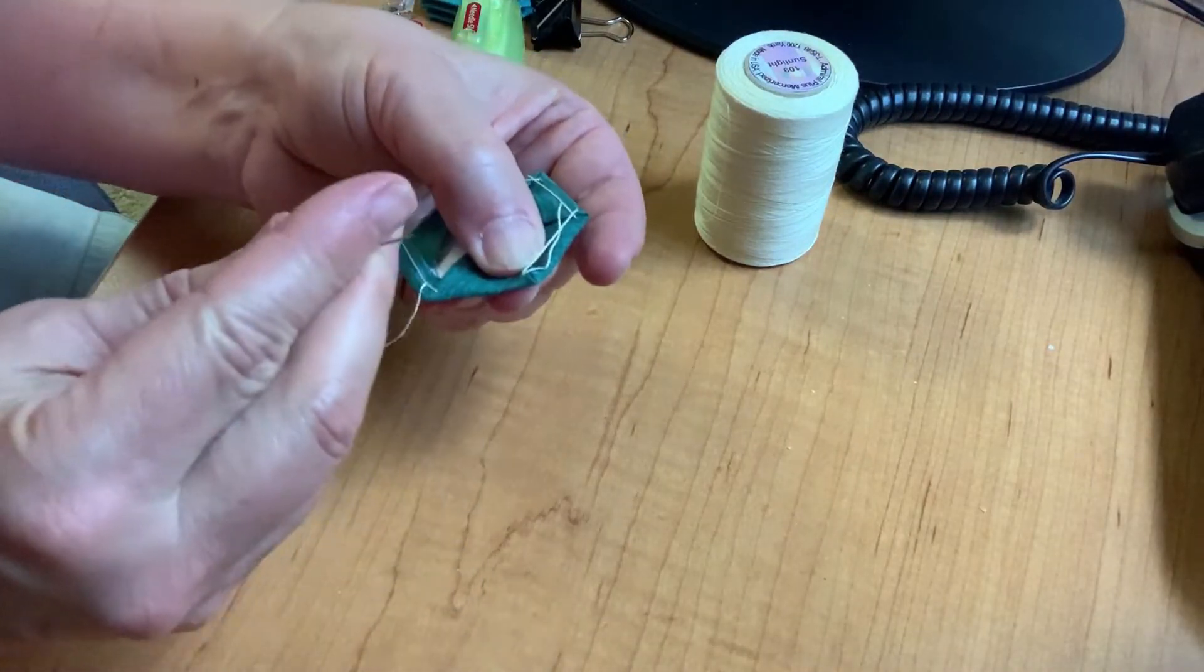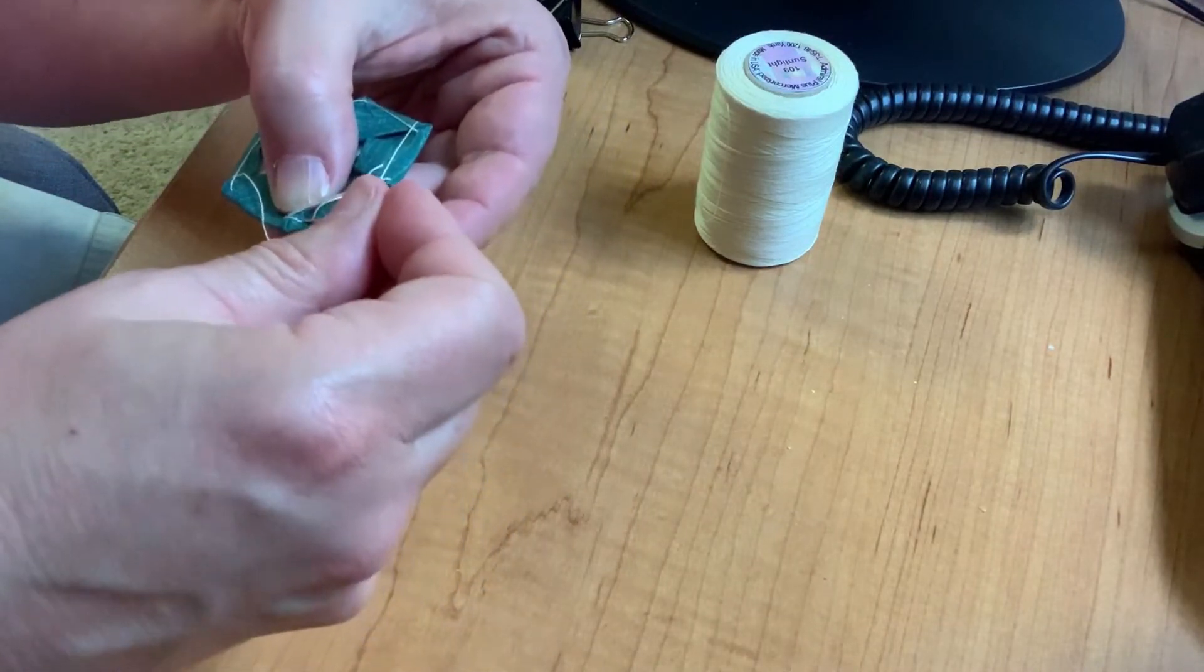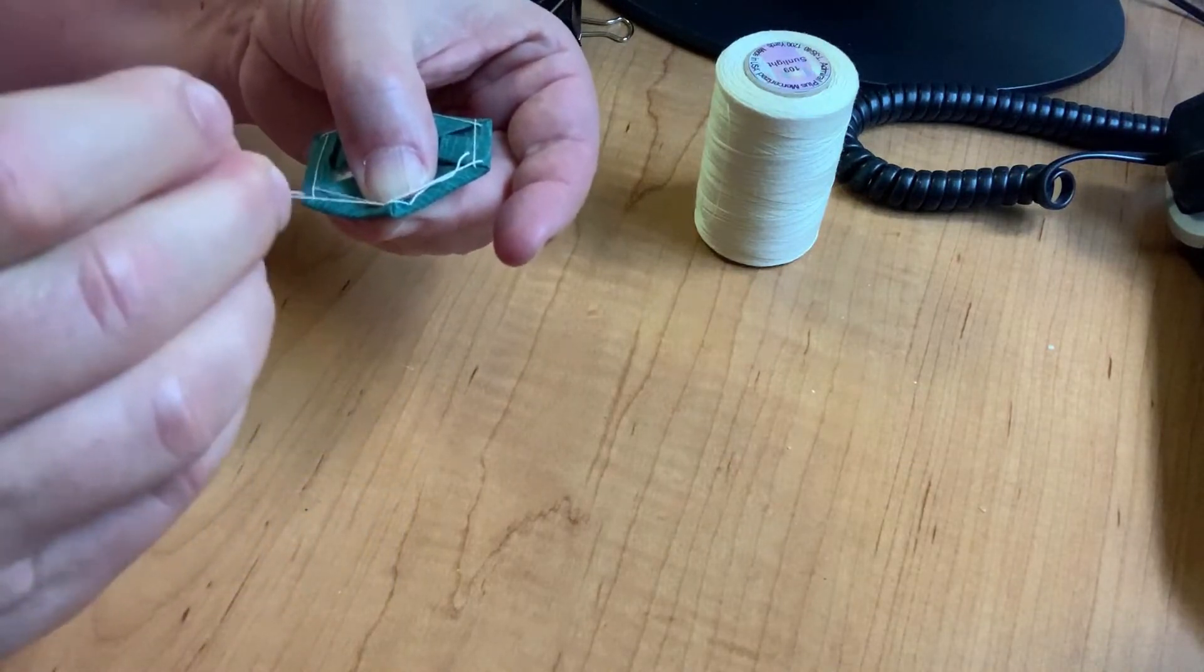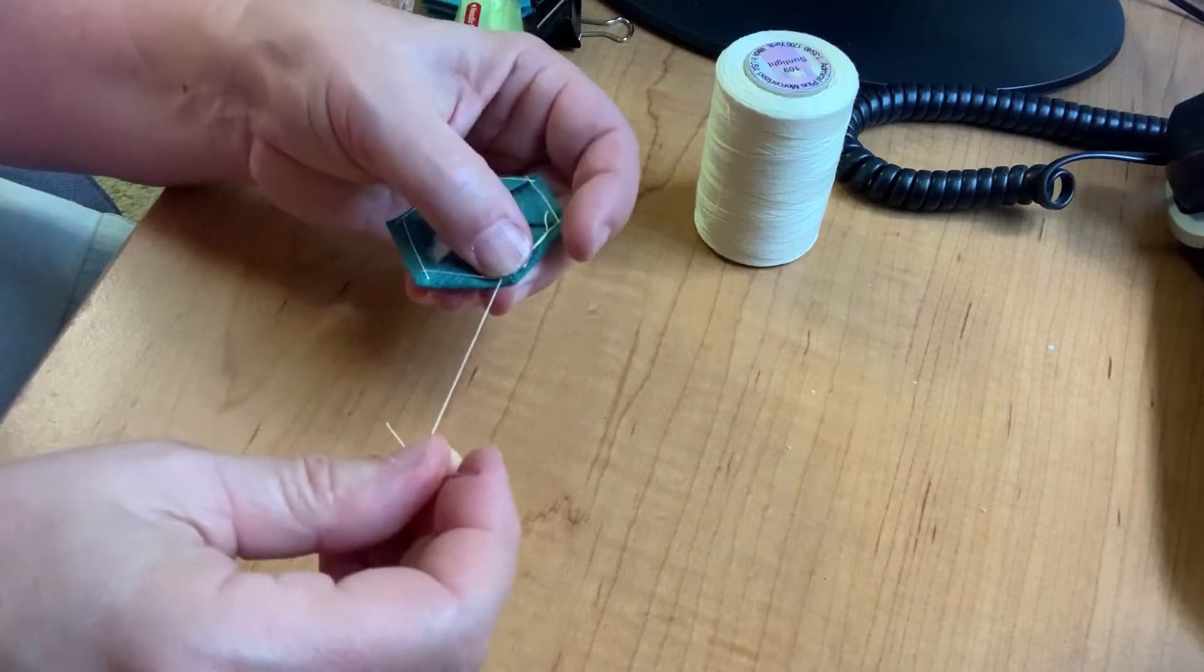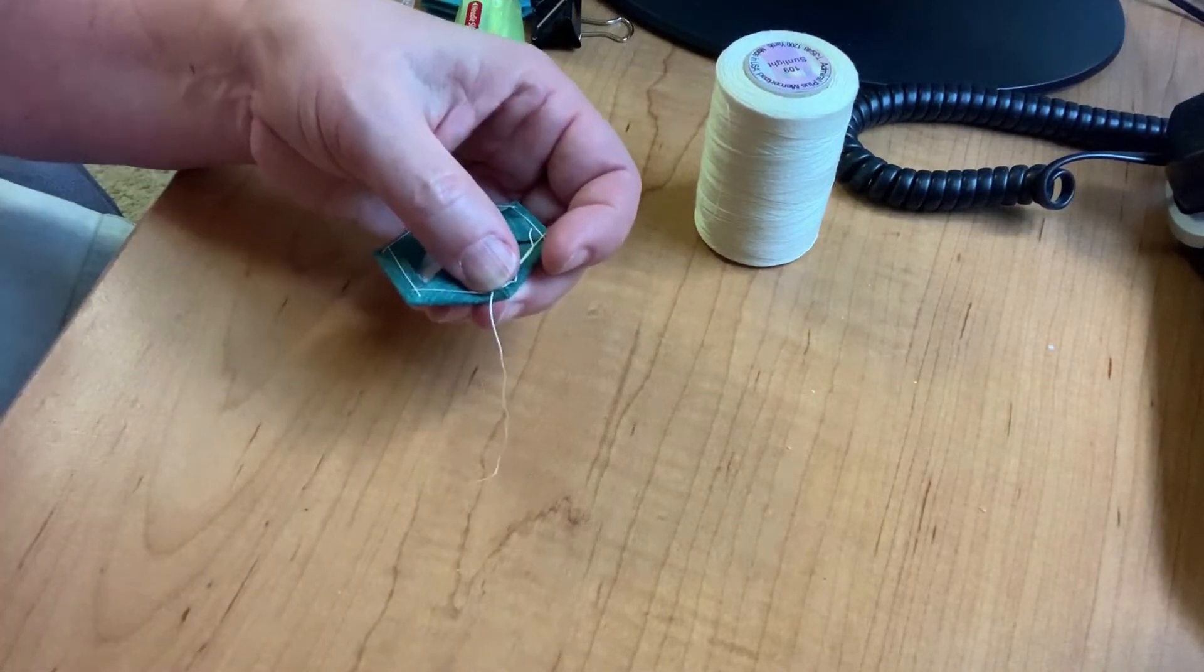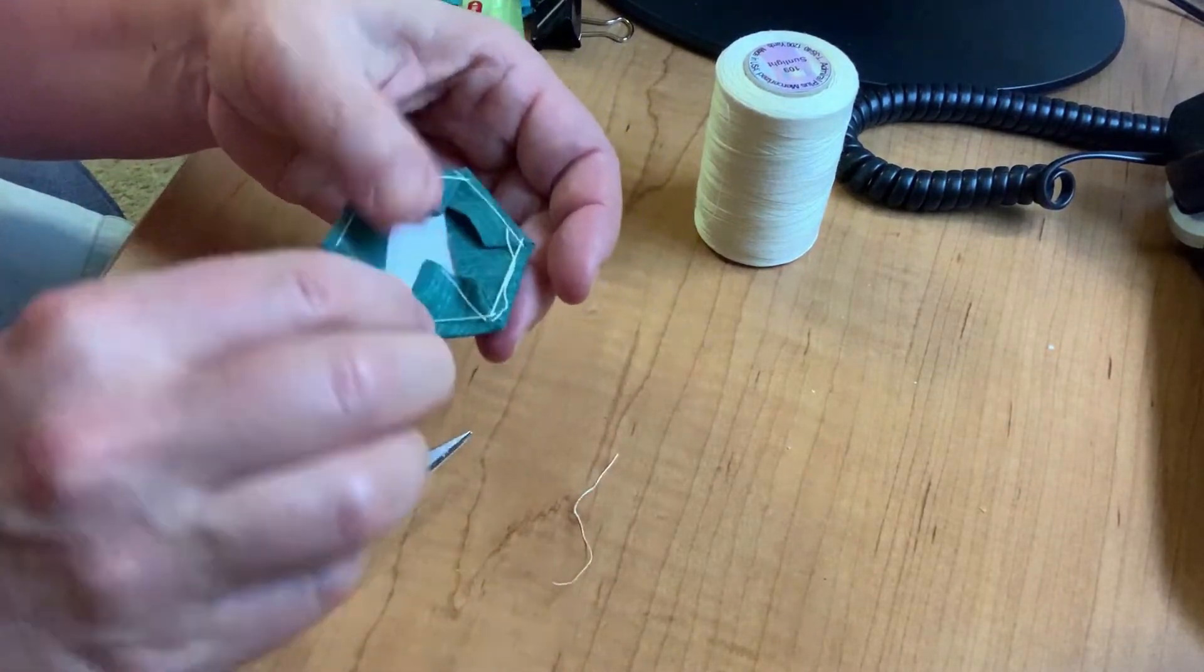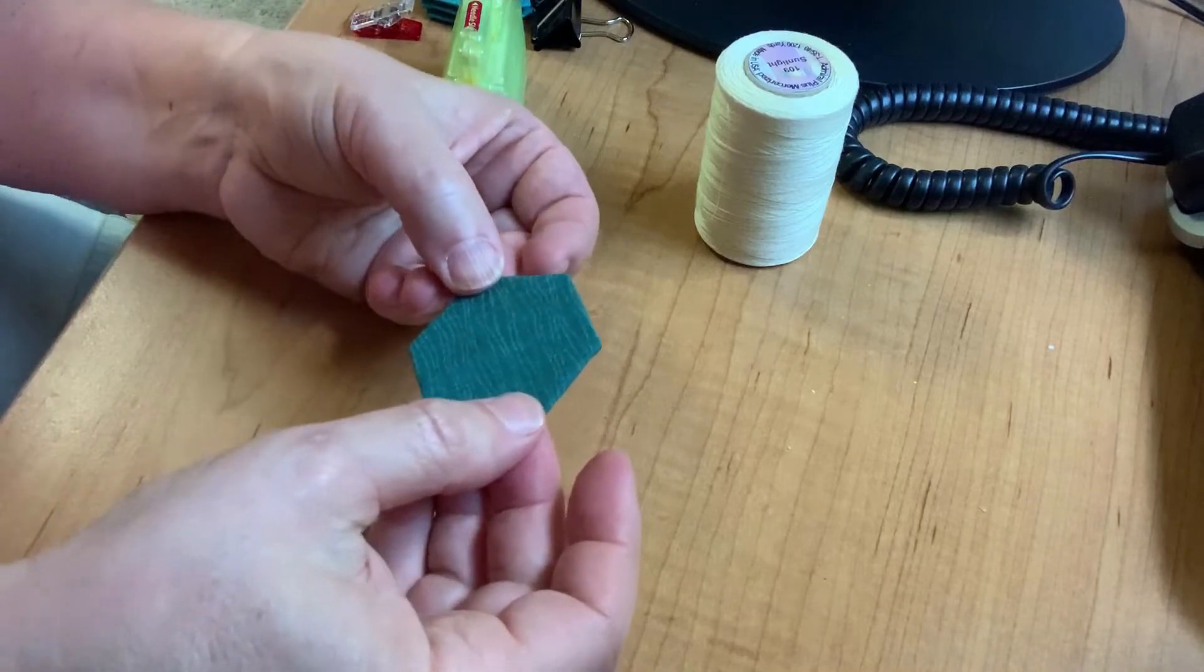And once I've done the last corner, I'm going to go back to the first one and do one more stitch, just to secure everything. I'm going to do a little bit of a tug to tighten everything up, and then I will cut about an inch away, and I have now basted my hexagon.